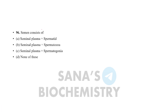Next question: semen equals seminal plasma plus spermatozoa, or seminal plasma plus spermatogonia, or none of these? Option B — seminal plasma plus spermatozoa — is the correct answer, because semen contains sperm (spermatozoa), not spermatogonia.